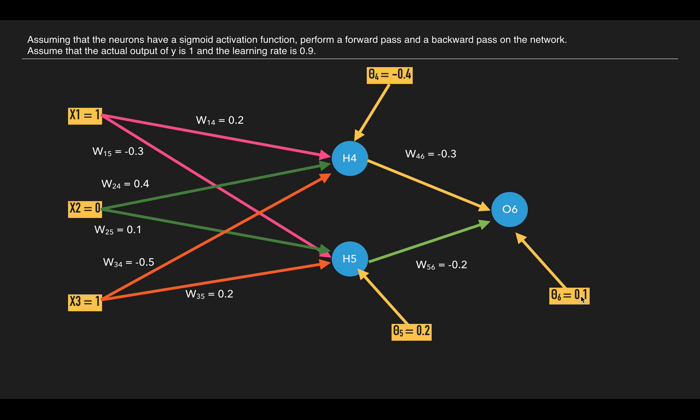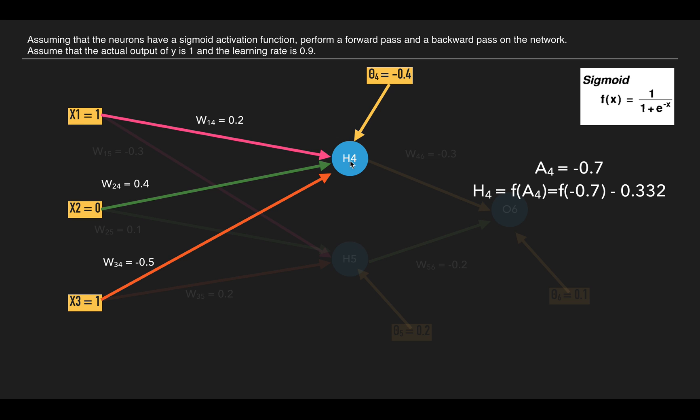First we will calculate for h4. For h4 we will multiply x1 by w14, x2 by w24, and x3 by w34, sum them up, and add the bias to it. After calculating we get the value minus 0.7. You can calculate it on your own.